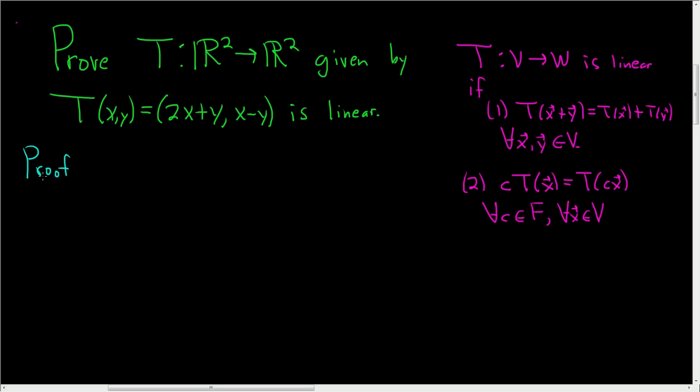So we'll start by taking some vectors in V. So take any, and let's use this notation here. Let's say x sub 1, y sub 1, and x sub 2, y sub 2. And our V here is R squared. And our W here is R squared. So this is what the vectors look like. They're ordered pairs. They're vectors. And these will be in R squared. And our scalar will be a real number.